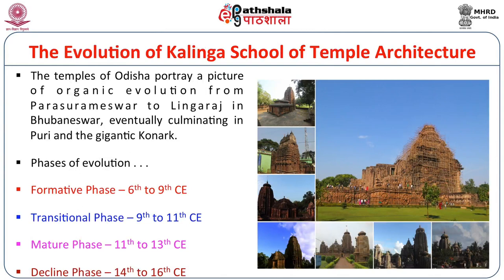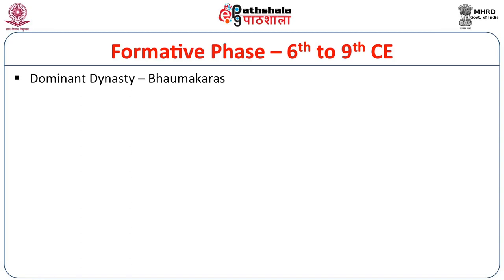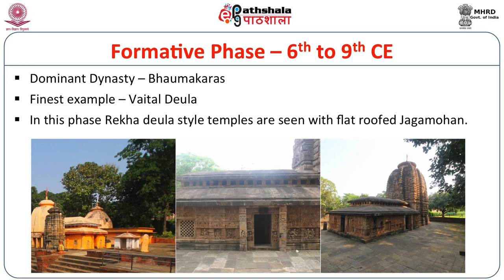The temples of Odisha portray a picture of organic evolution from the Parsurameshwara to Lingaraj in Bhuvaneshwar, eventually culminating in Puri and Konark. There are four phases: the formative phase (6th to 9th century CE), the transitional phase, the mature phase, and the decline phase. The dominant dynasty during the formative phase were the Bhaumakaras, who were Shaivas. The finest example of their style of architecture was the Vetal Deola.